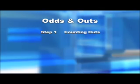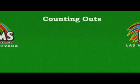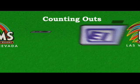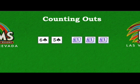Step one: counting outs. Here's an example of counting outs. Suppose my hand is the six of spades, five of spades. The flop comes down queen of spades, three of diamonds, seven of spades.